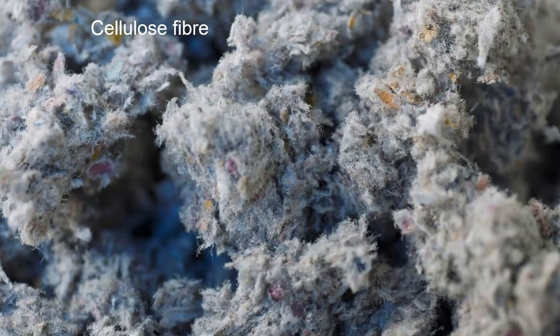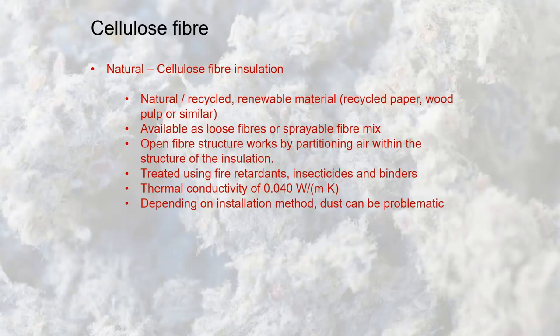Cellulose fibre — effectively mashed-up newspaper, cotton fibres and recycled fibres — can be pulped and made into an insulating material that is then poured or blown into voids or between the members of a timber frame. Its thermal conductivity is similar to most other systems that partition air. Like sheep's wool, it's usually treated with fire retardants and insecticides, and dust from the material can be problematic.